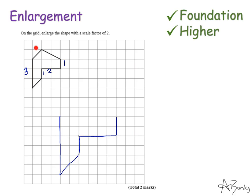This diagonal here goes through 1 square, so the new one is going to go through 2 squares. And then I've left the most complicated edge to last because I don't have to enlarge this one now. I can just join it up to my other points.